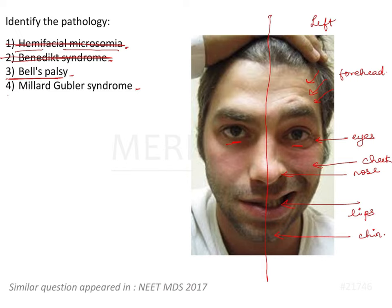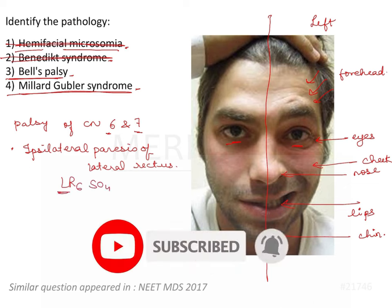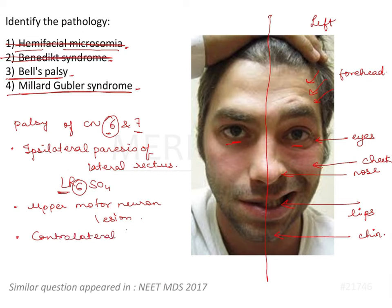Millard Gubler syndrome is a clinical syndrome involving palsy of cranial nerve six (abducens) and seven (facial). It is characterized by ipsilateral paresis of the lateral rectus — remembering LR6, SO4 — with an upper motor neuron lesion and contralateral hemiplegia. These are the three key features of Millard Gubler syndrome.